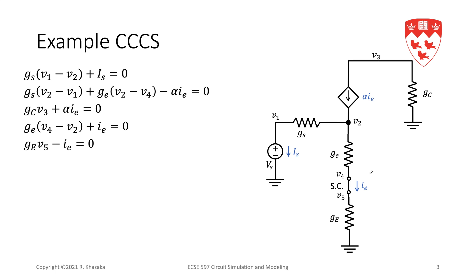We have two additional variables, so we need two additional equations: the model for the voltage source and the model for the short circuit. The short circuit model is simply v4 equals v5, or v4 minus v5 equals zero. The model for the voltage source tells us that vs equals v1, so the voltage at v1 is simply the voltage drop vs. That is our complete set of equations.